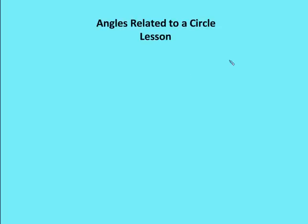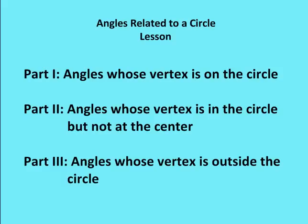Hello and welcome to Ought and Math. In this edition, we're going to go through our second of three installments on angles related to a circle. In the first installment, we talked about angles whose vertex is on the circle. Now we're going to talk about angles whose vertex is in the circle, but not at the center. In the next installment, we're going to talk about angles whose vertex is outside of the circle.